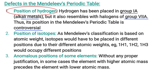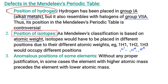The second defect is related to the position of isotopes. Since Mendeleev classified elements based on atomic mass, isotopes — which have the same atomic number but different mass numbers — should occupy different positions according to their atomic mass. For example, the isotopes of hydrogen are protium (¹H¹), deuterium (¹H²), and tritium (¹H³), all with atomic number 1 but mass numbers 1, 2, and 3 respectively.